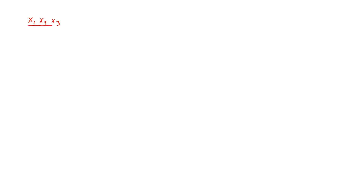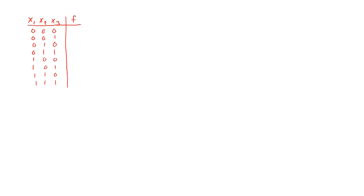To understand this better, let us look at an example. We have a function in three variables x1, x2, and x3. We enumerate the possible input combinations and define our function as follows: 1, 1, 1, 0, 0, 0, don't care, and then 1, 0, 1.